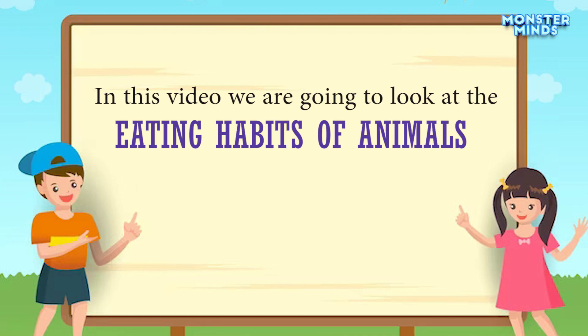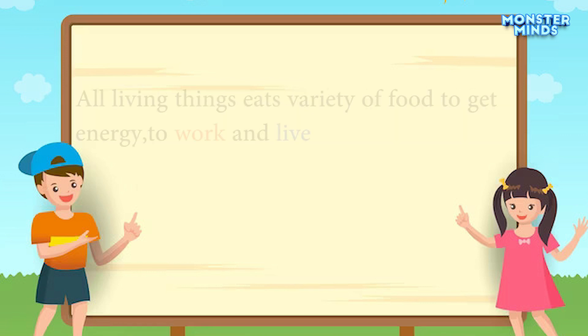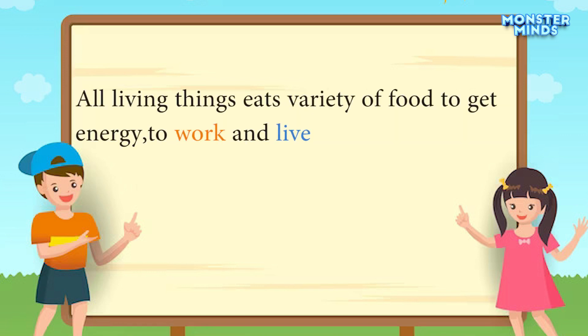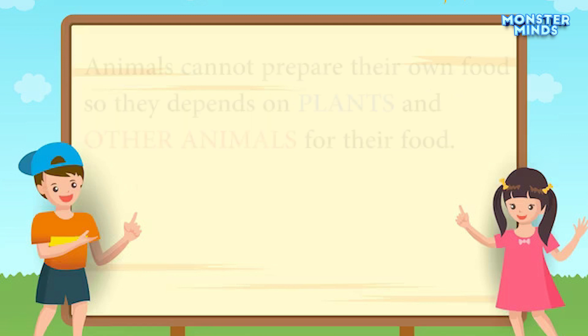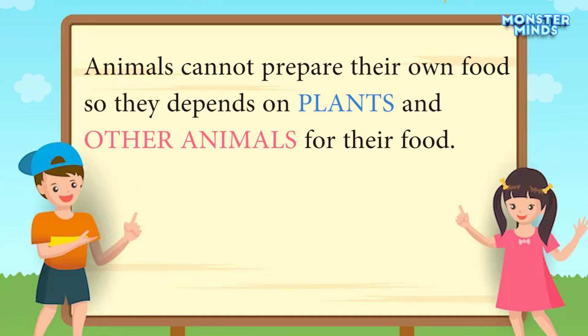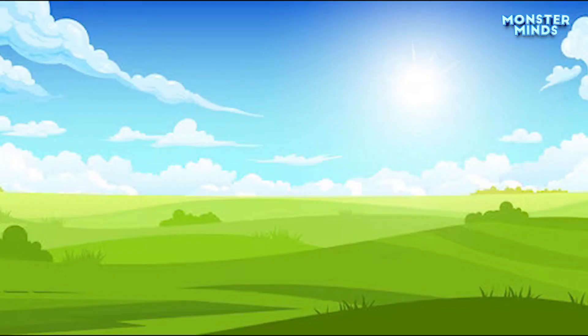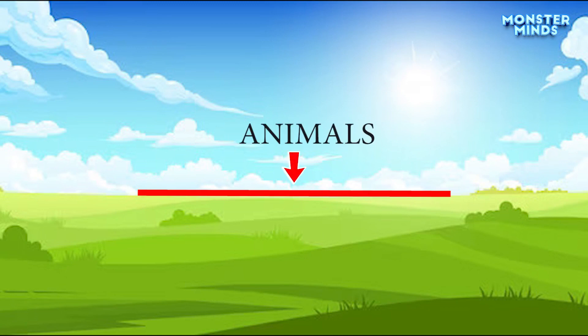In this video, we are going to look at the eating habits of animals. All living things eat a variety of food to get energy, to work and live. Animals cannot prepare their own food, so they depend on plants and other animals for their food. Animals fall into three different groups based upon what they eat.